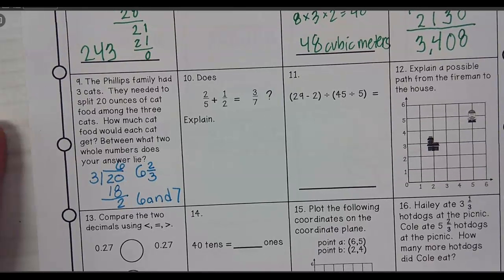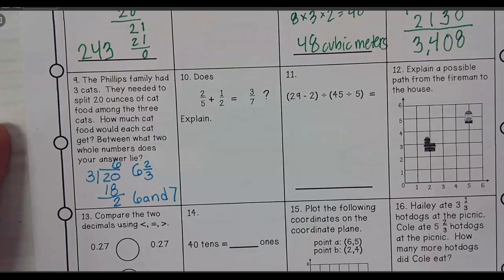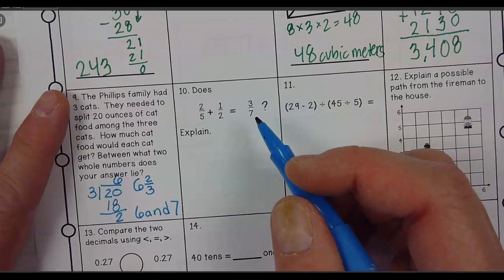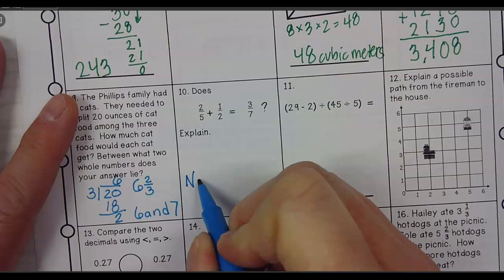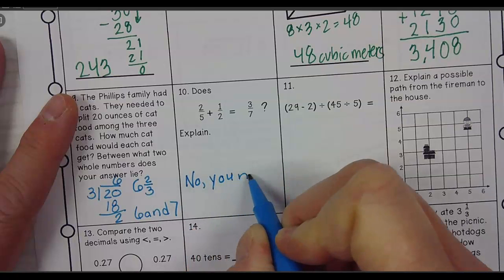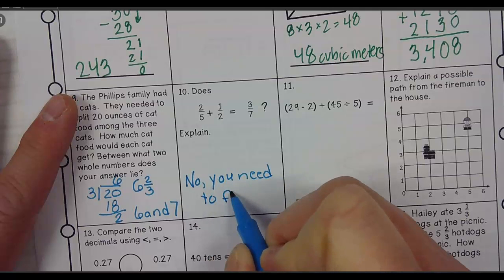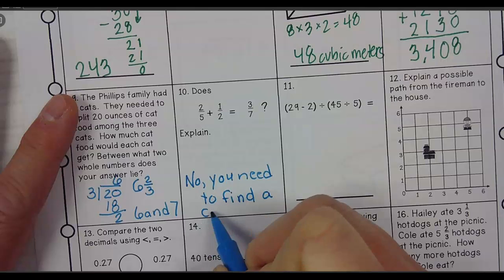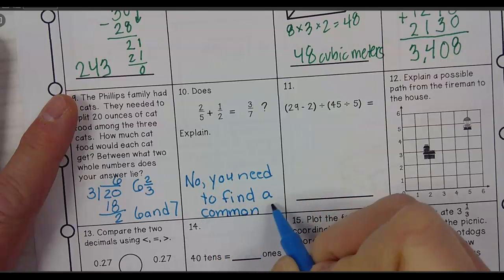2 fifths plus 1 half equals 3 sevenths. So it's going to be, no, you need to find a common denominator.